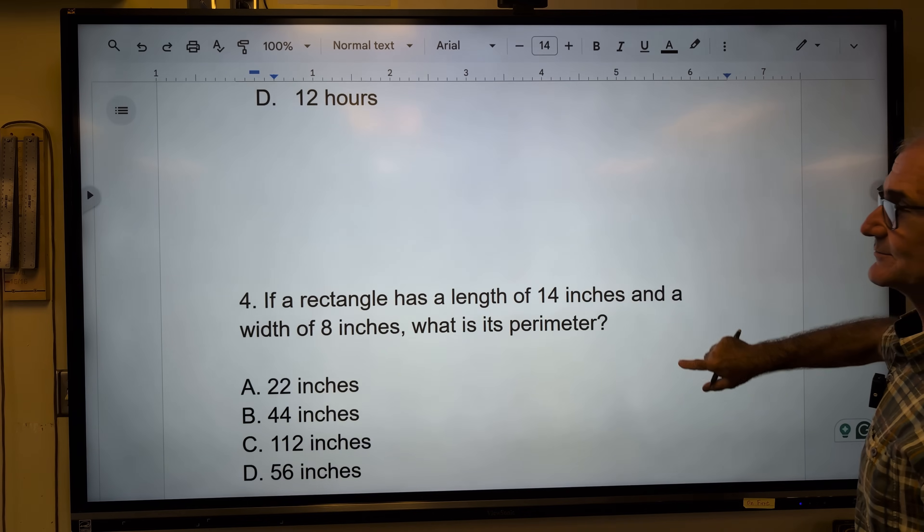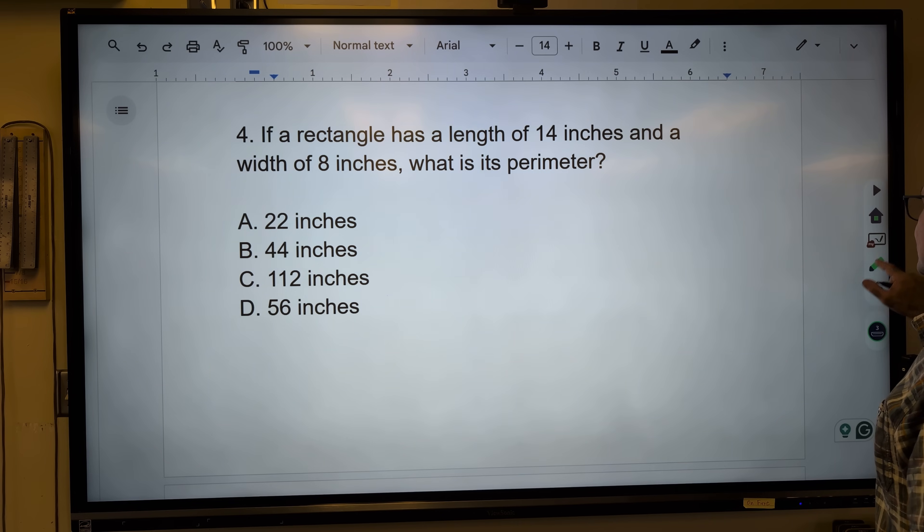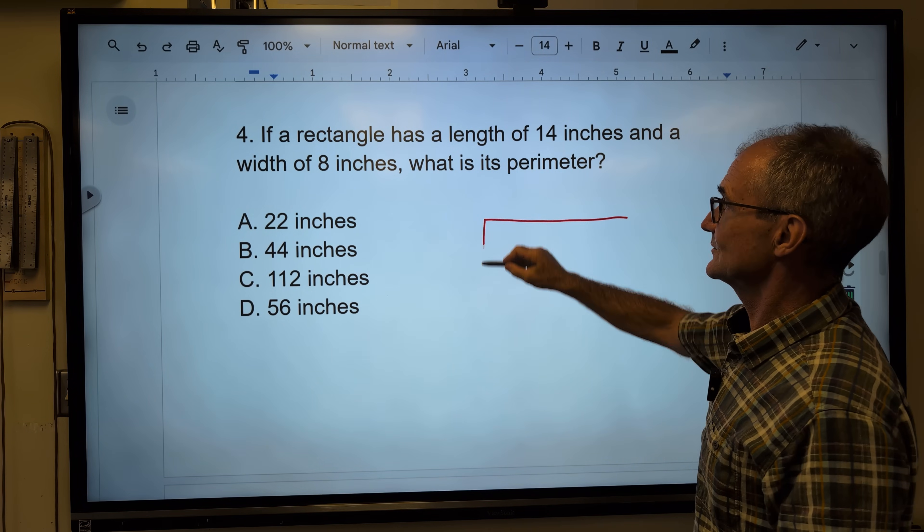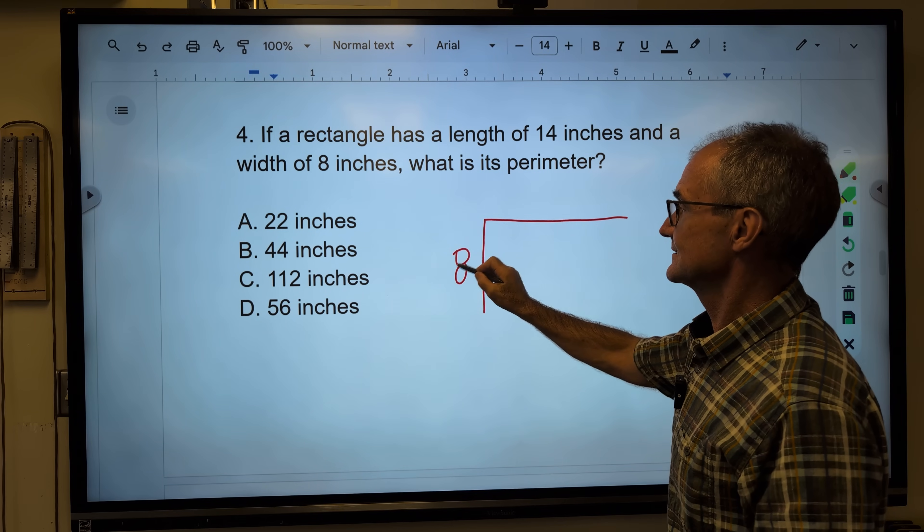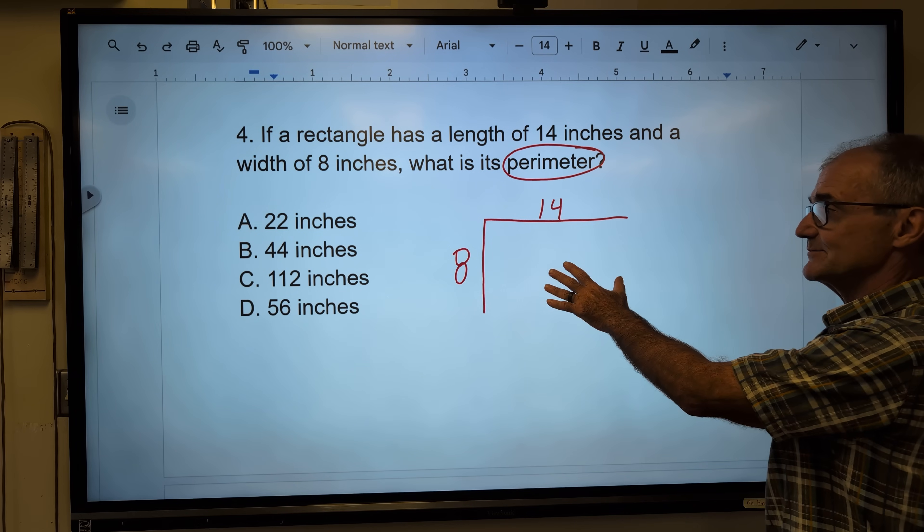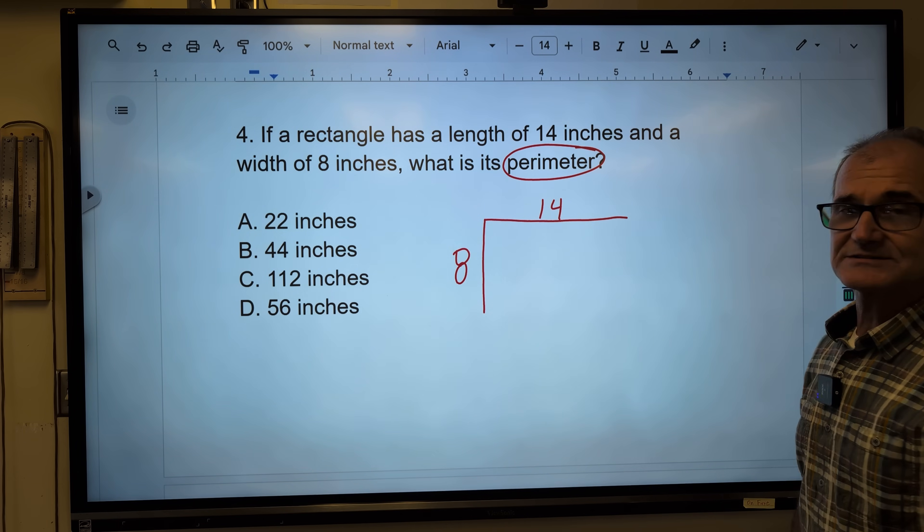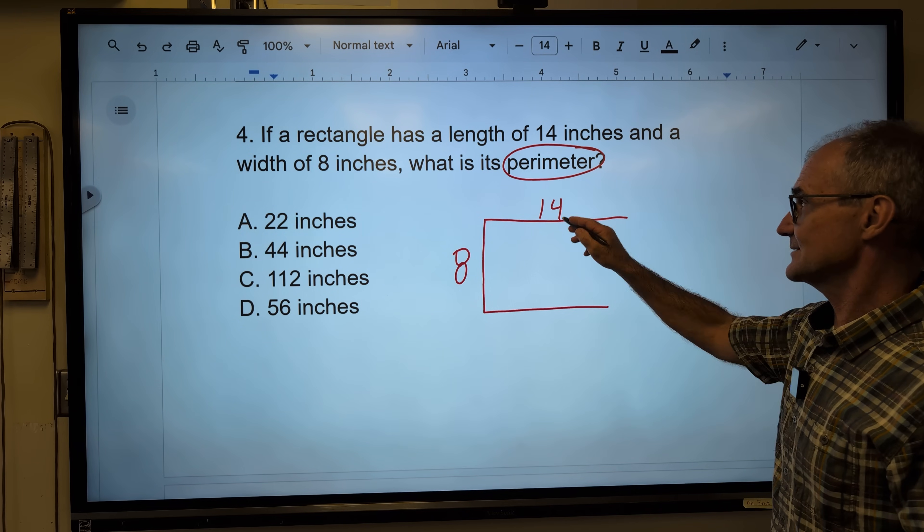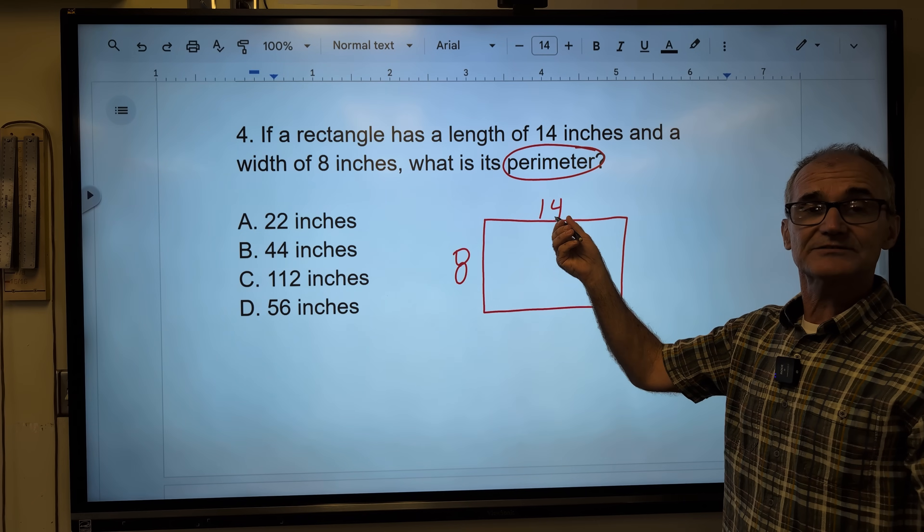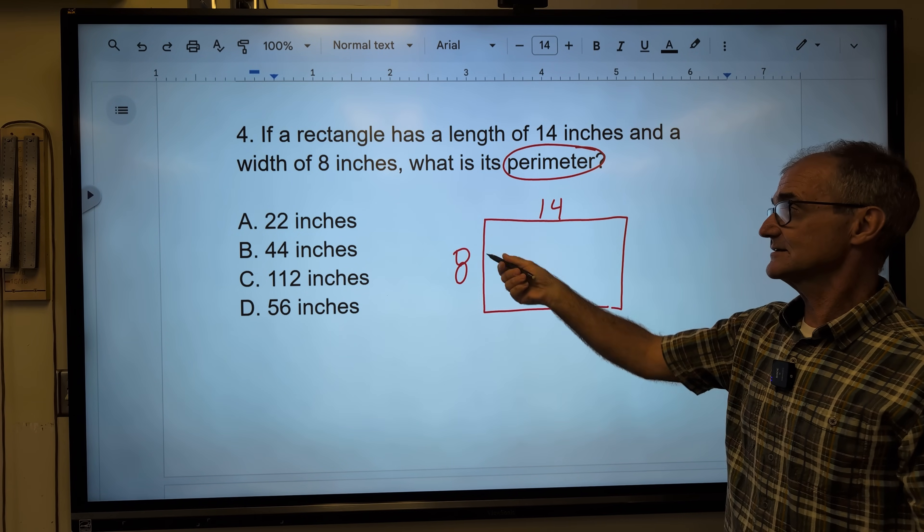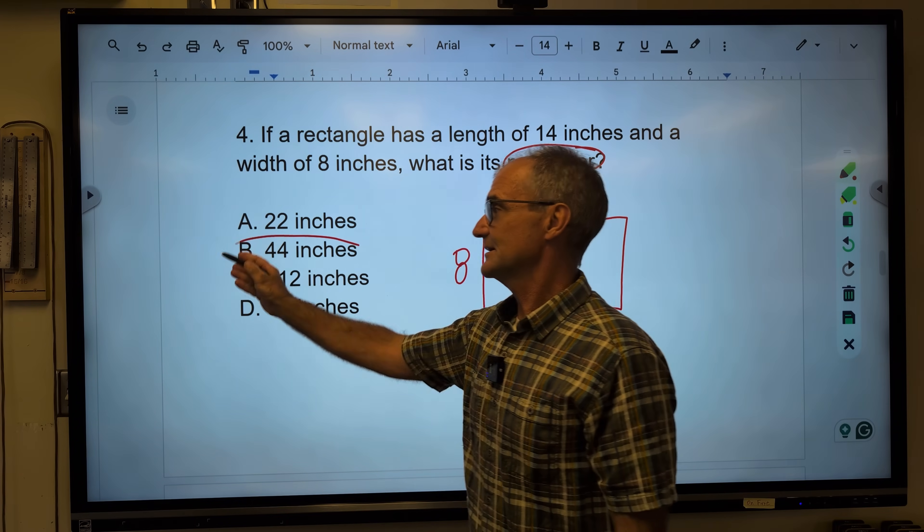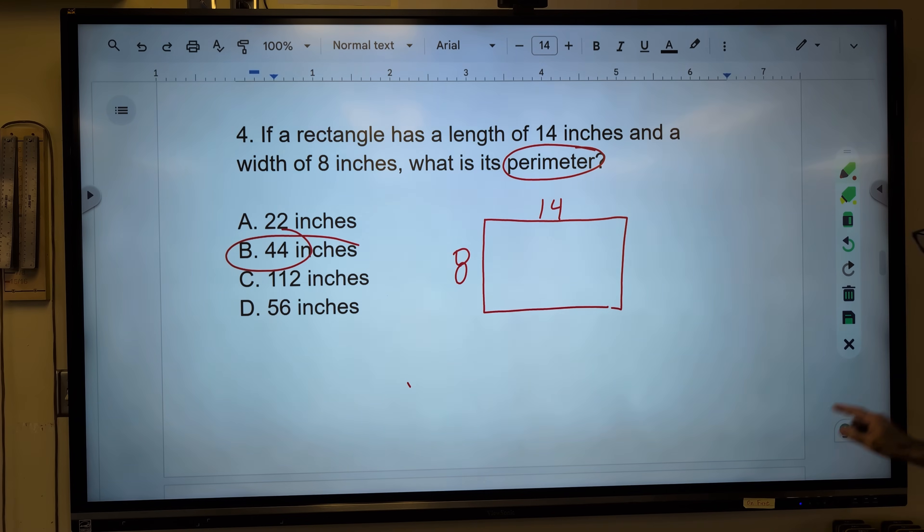Moving on to problem number four right here. Pause the video, give it a try. A rectangle has a length of 14 and a width of 8. What is the perimeter? So the important word right here is perimeter. That is not how much goes inside the box. It's how long it is along the outside. Well, I know this side is the same as that side. This side, the same as that side. So if I do 8 plus 14, 22, that's these two. 22 doubles are these two. So 22 and 22 give me 44 inches. Correct answer, answer B.